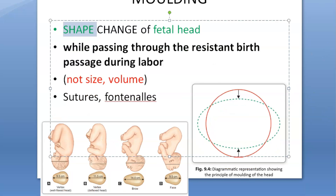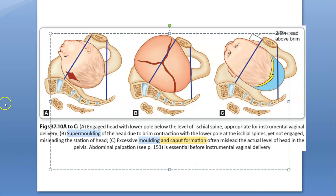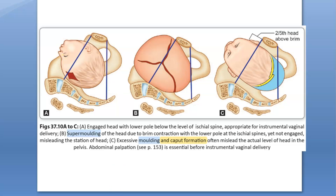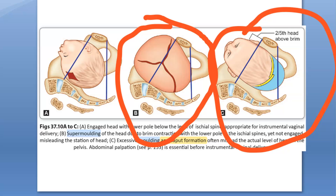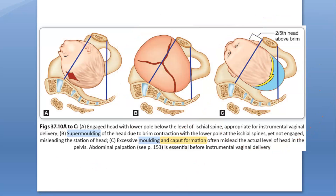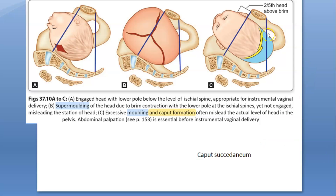Here they are showing an image of the baby's head going through the pelvis. In image B, they are showing something called super molding - it is trying to adjust way too much. This can lead to hemorrhage. In the last image, there is excessive molding and it has become so oval - a caput succedaneum is forming. You can see the blue area they are showing which represents caput succedaneum.